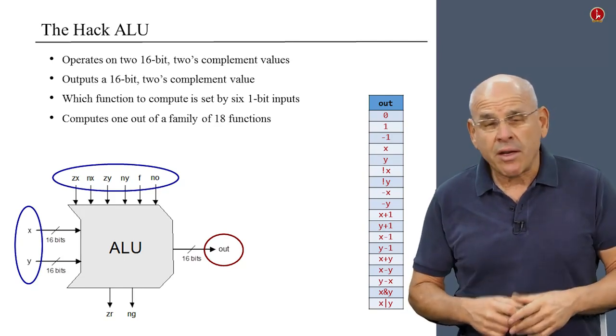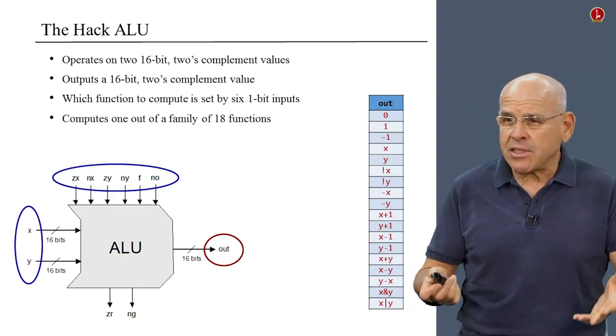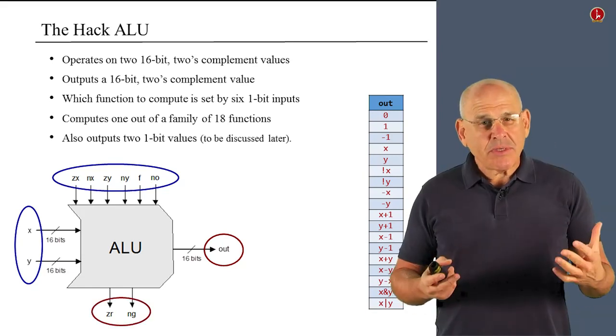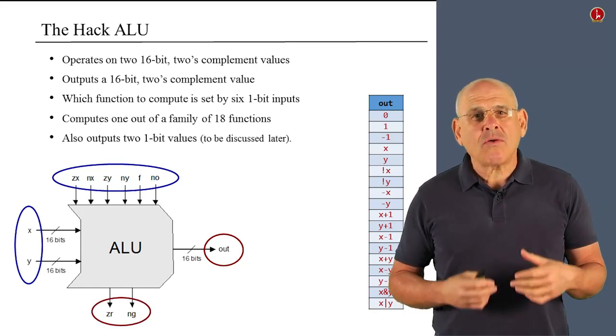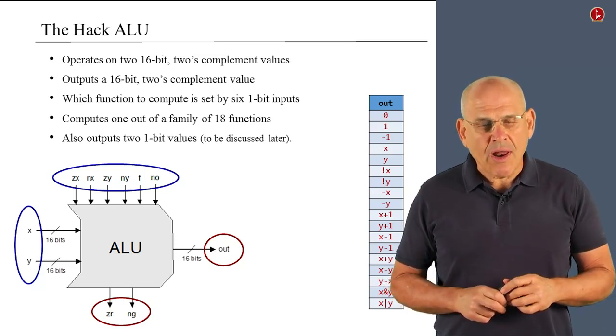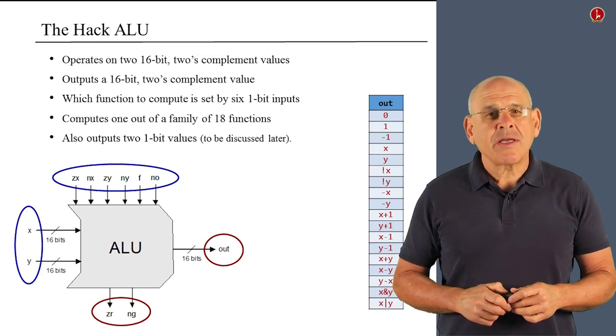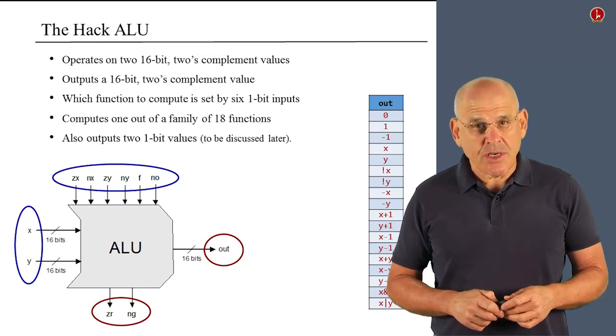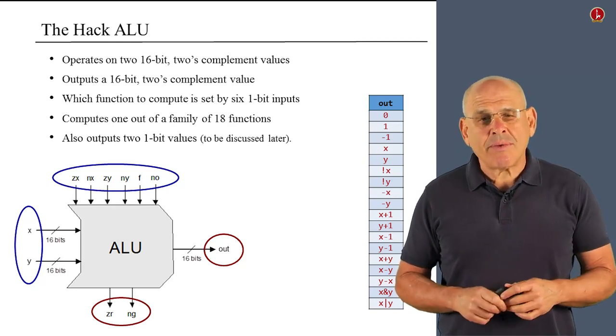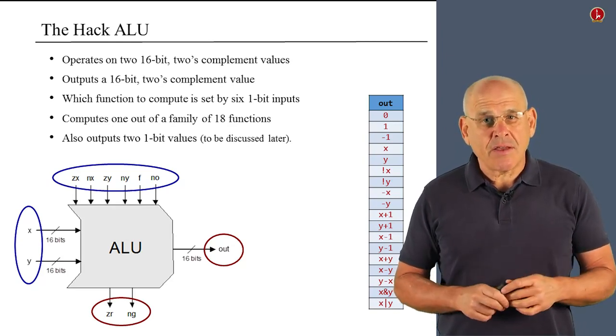And other functions are more involved and interesting like x plus y, x and y, and so on. As we see from the diagram, the ALU also computes two one-bit control outputs, which are called ZR and NG. The role of these two control bits and the reason for these names will become clear later in the unit.